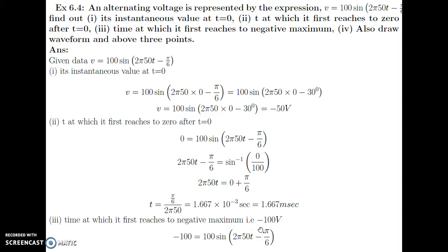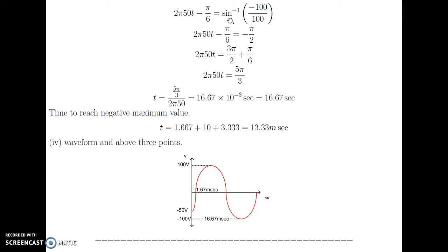The time at which the voltage reaches negative maximum means v equals minus 100. So minus 100 equals 100 sin(2π×50t − π/6), giving sin(2π×50t − π/6) equals minus 1. Sin inverse of minus 1 is minus π/2. Since we need time after zero crossing (positive), treat minus π/2 as 3π/2. So 2π×50t equals 3π/2 plus π/6, which equals 5π/3. Dividing gives t equal to 16.67 milliseconds.